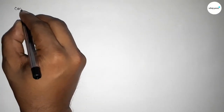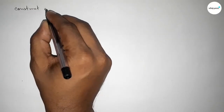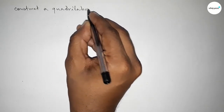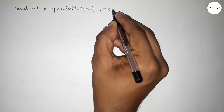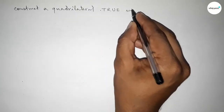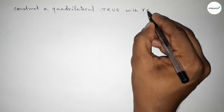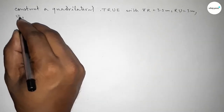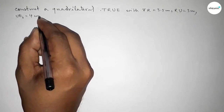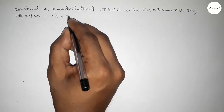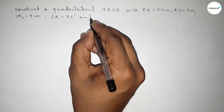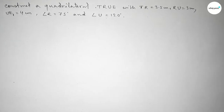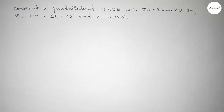Hi everyone, welcome to Size Share Classes. Today in this video we have to construct a quadrilateral TRUE with given measurements: TR equal to 3.5 centimeters, RU equal to 3 centimeters, UE equal to 4 centimeters, angle R equal to 75 degrees, and angle U equal to 120 degrees. So let's start the video.